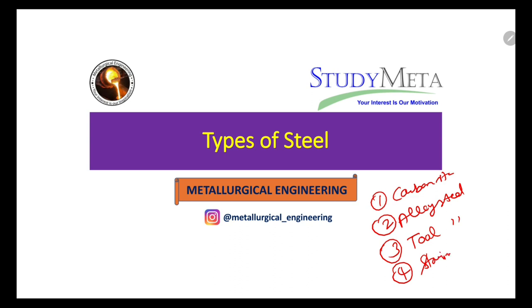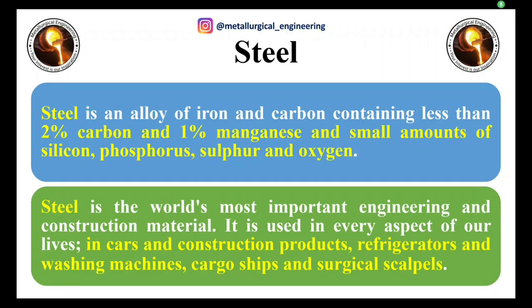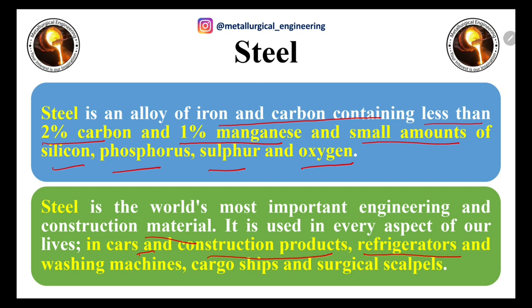Before discussing these four types, a slight introduction of steel: steel is an alloy of iron and carbon containing less than 2% carbon, 1% manganese, and small amounts of silicon, phosphorus, sulfur, and oxygen. It is the world's most important engineering and construction material, used in every aspect of our lives — in cars, construction products, refrigerators, and washing machines.